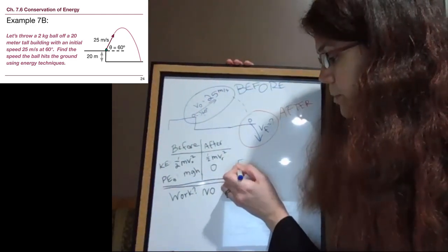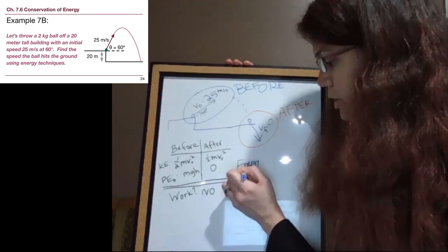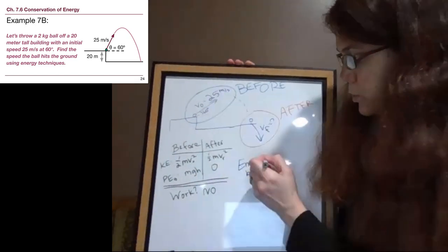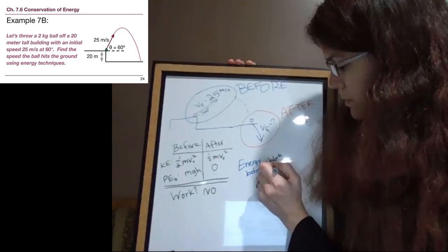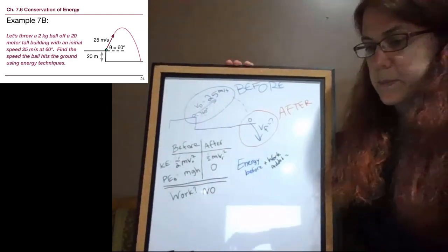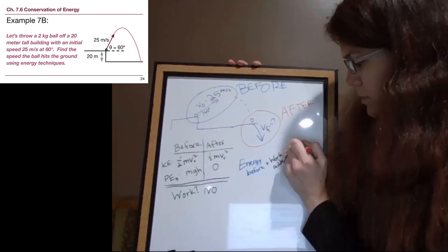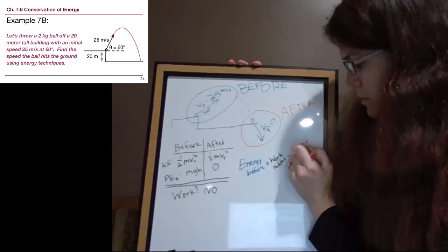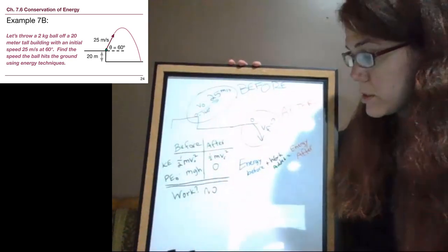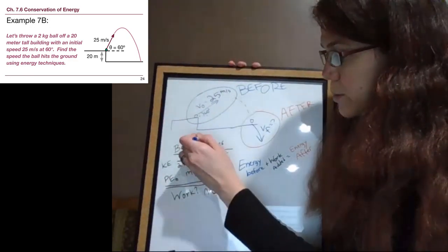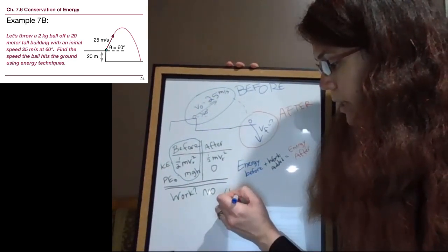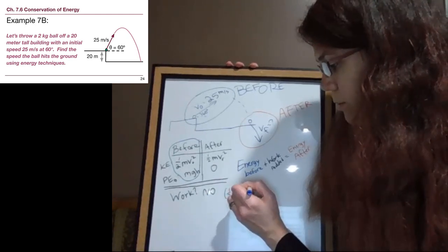The reason we go through and ask ourselves all of those questions is because that allows us to know what terms are going to go into our energy problem. Because every time that we set this up, it's energy before plus work added equals energy after. And so when we go through this, just like the first problem, we're taking the before column and we're saying, okay, that's what goes into energy before. One half m v initial squared plus m g h.